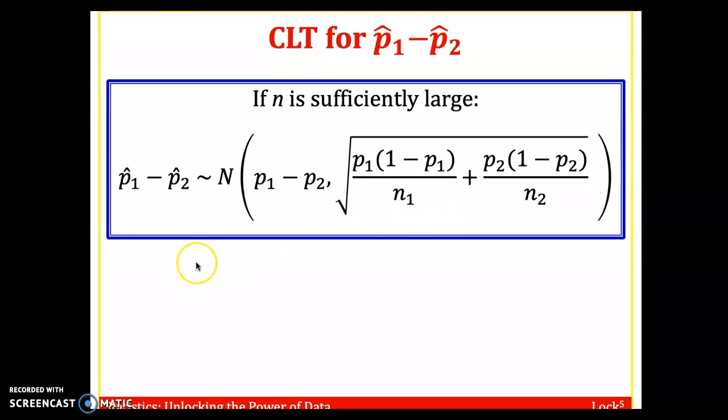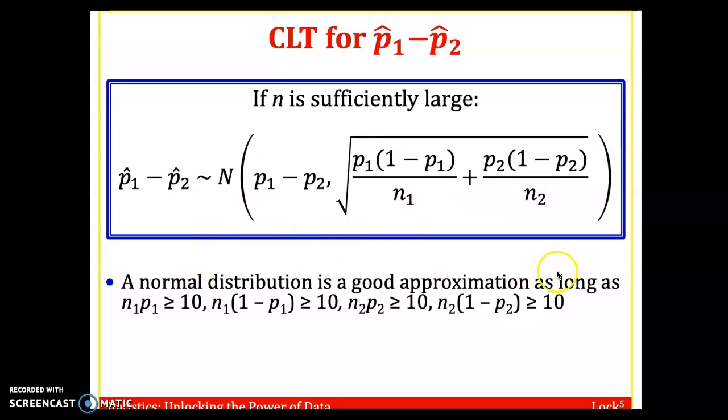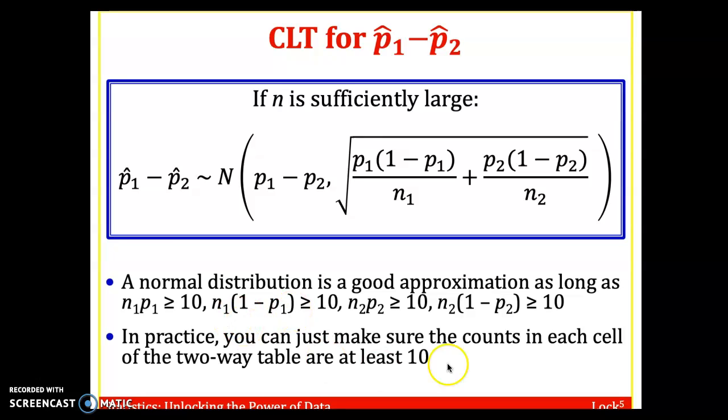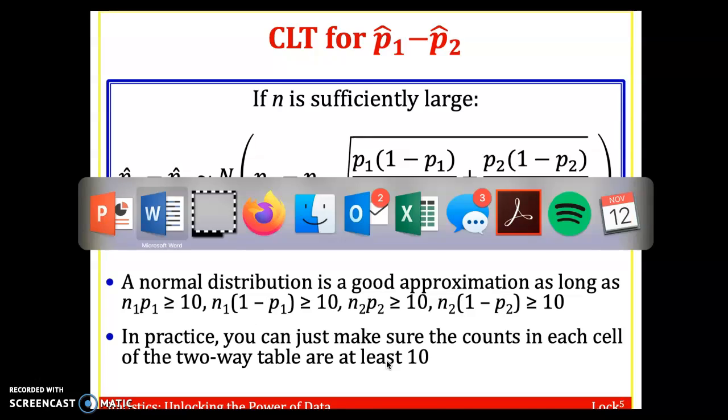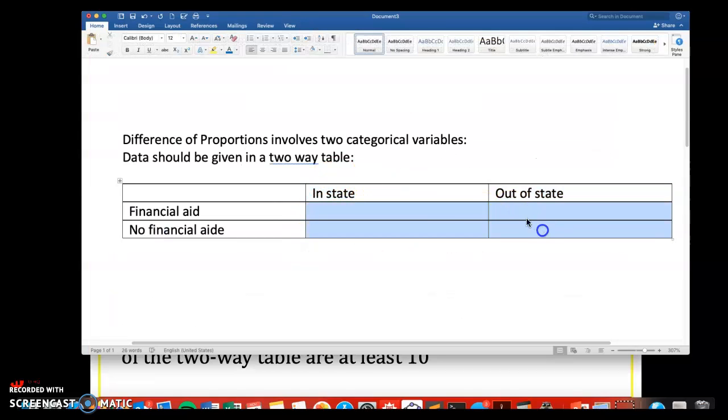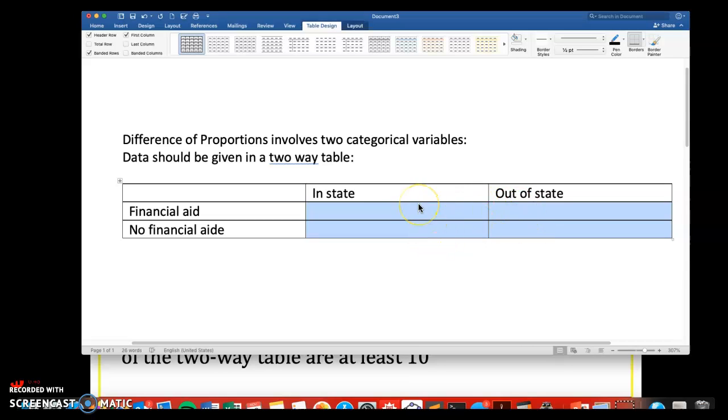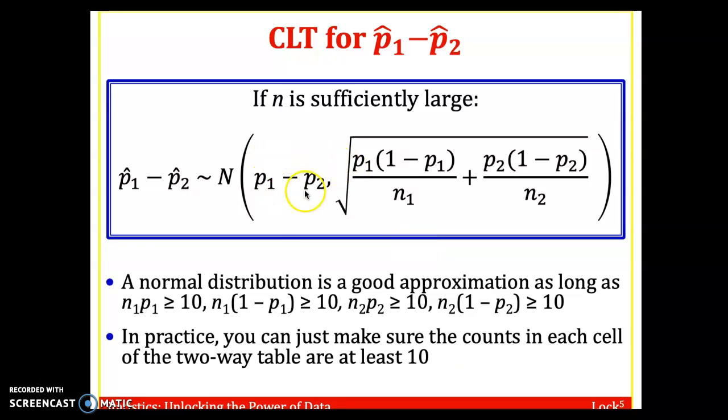A normal distribution is a good approximation as long as we have N1 times P1 is greater than 10, N1 times 1 minus P1 is greater than 10, N2 times P2 is greater than 10, and N2 times 1 minus P2 is greater than or equal to 10. The way I think about this is that means if we have two groups, two categories, if we were to organize the data in a two-way table, there should be at least 10 in each cell. We would need all four of these values, these cells, to be 10 or more in order to use the normal distribution.